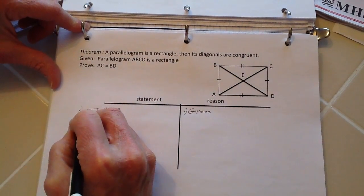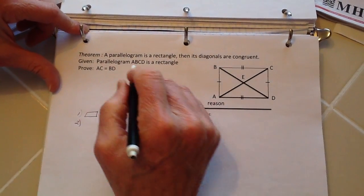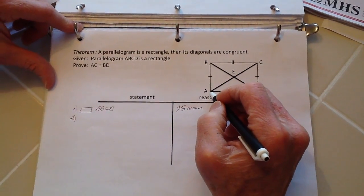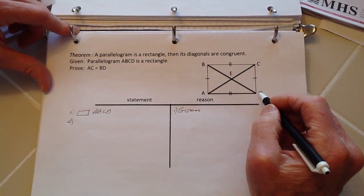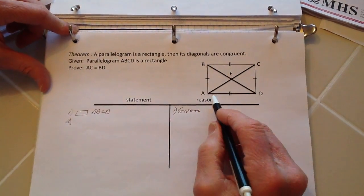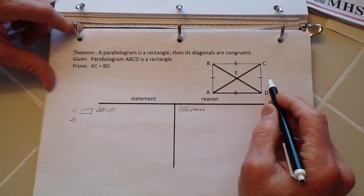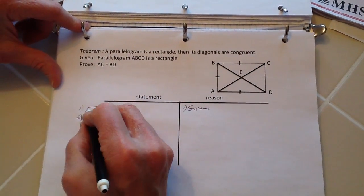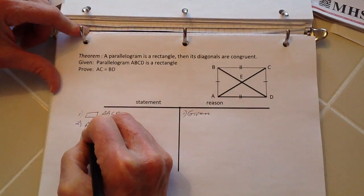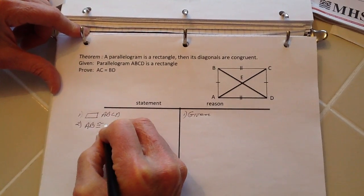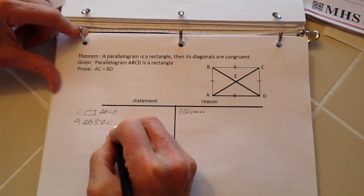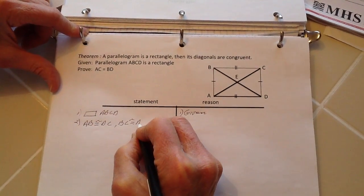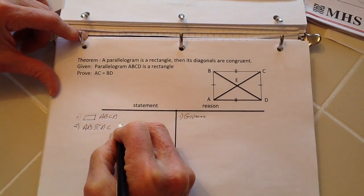Next, number two: I know that because I have a parallelogram, this side AB is congruent to DC, and likewise BC is congruent to AD, because the opposite sides of parallelograms are congruent. So I will put down here AB is congruent to DC and BC is congruent to AD, and of course these are all segments.